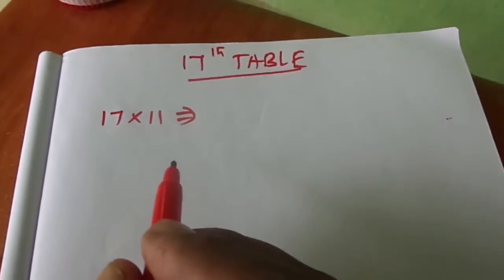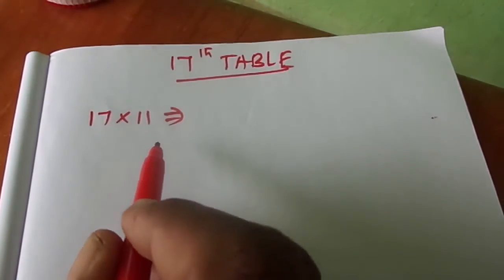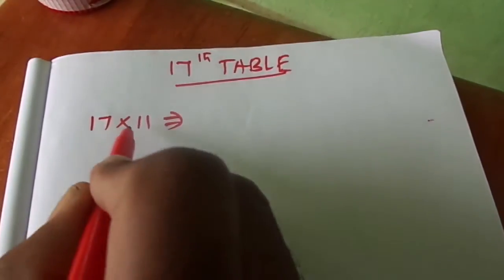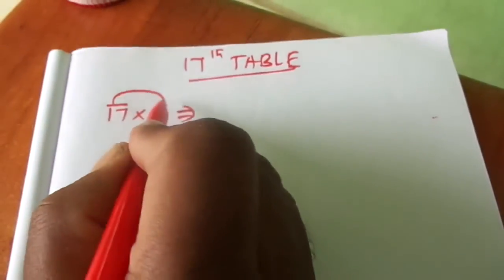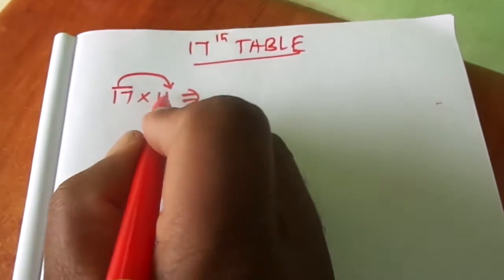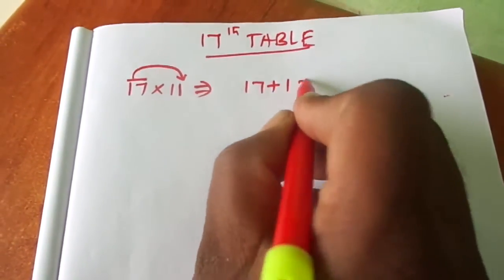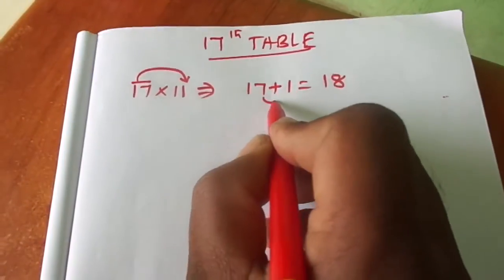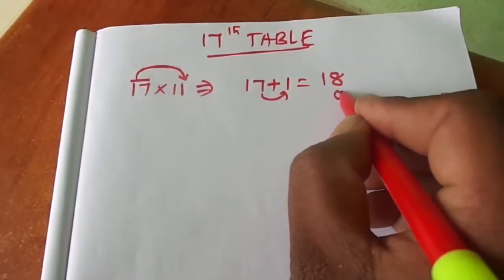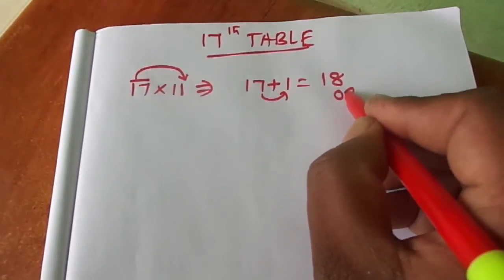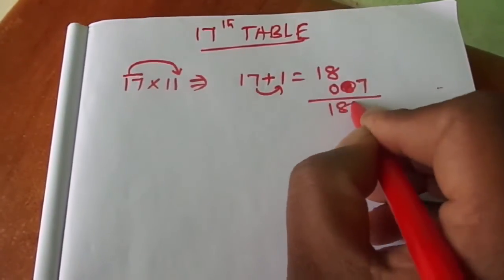17th table. You can get the multiplication of 17 in a very easy way. It requires two steps: addition of 17 to one place of the second number. 17 plus 1 is 18. Then multiply: 7 ones are 7, add 10s — plus 7 ones are 7. That is equal to 187.